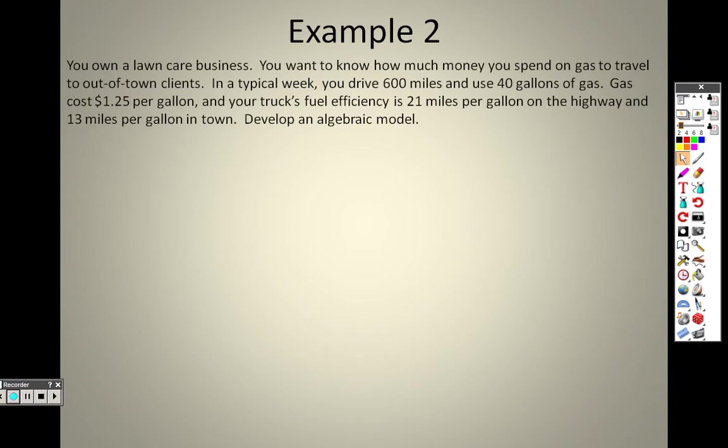You own a lawn care business and you want to know how much money you spend on gas to travel to out-of-town clients. In a typical week, you drive 600 miles and use 40 gallons of gas. Gas costs $1.25 per gallon and your truck's fuel efficiency is 21 miles per gallon on the highway and 13 miles per gallon in town. So you want to develop an algebraic model. This is what you can use. The total miles that you're going to do are on the highway and in the local, right? So we'll make the highway X and the local Y. We know that the total amount of miles you went is 600. We know that you went 21 miles for highway. We know you went 13 miles for local. So there's the equation.